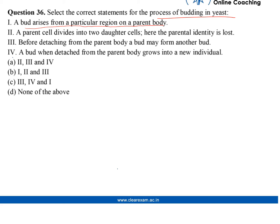In the first case, we have options 2, 3, and 4. Option 1 is correct as a bud arises from a particular region of a body, so the first part is correct. But among options 2, 3, and 4, one of them is incorrect. The second option also has one that is incorrect.